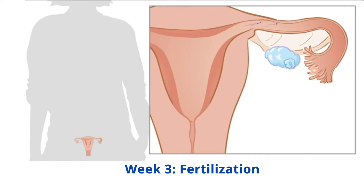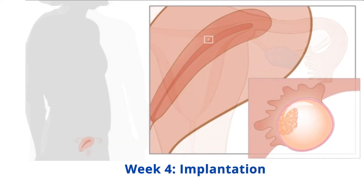Week 3 - Fertilization: the egg cell is released into the fallopian tube and fertilized by a sperm cell. The fertilized egg cell, called an embryo, divides into two cells, four cells, and so on, forming a tight ball. It moves toward the uterus and implants into the uterine wall.